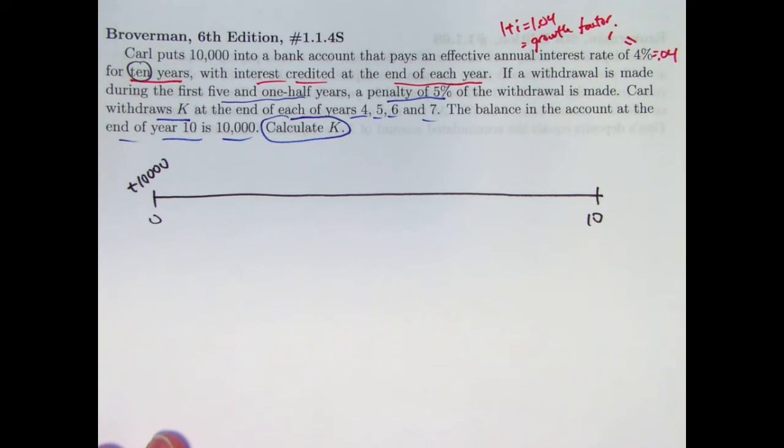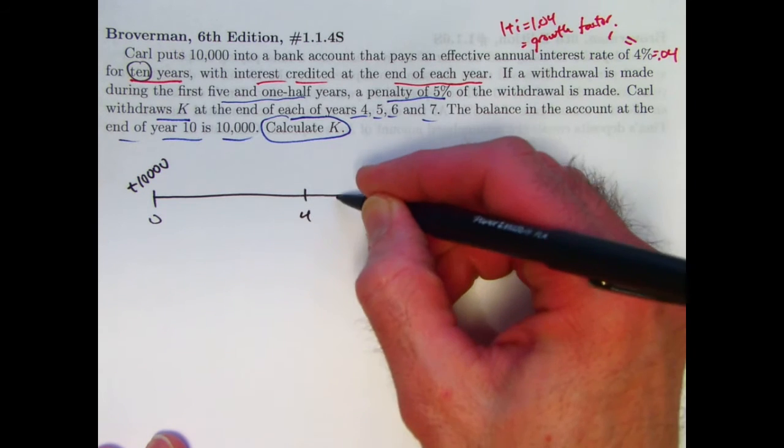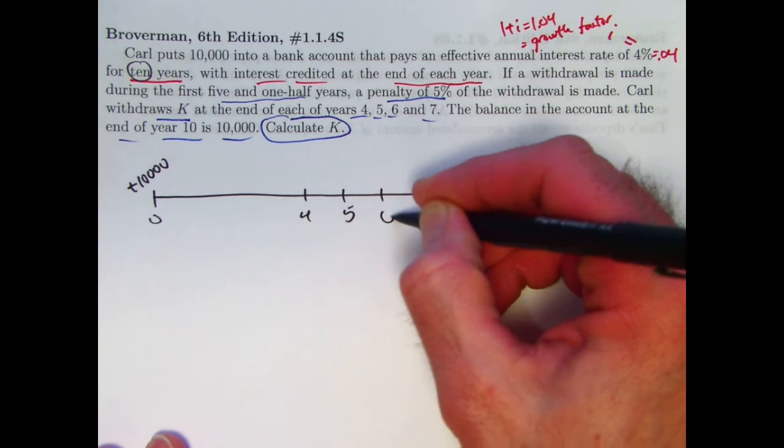I've got the 10,000 deposit. I'll put a plus sign with that at time 0. And I've got these four withdrawals at times 4, 5, 6, and 7, right about here, here, here, and here.